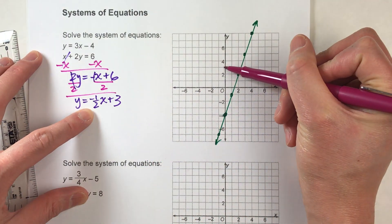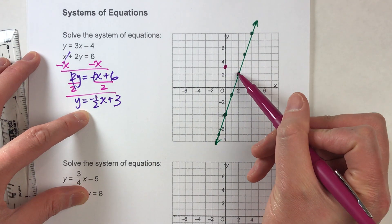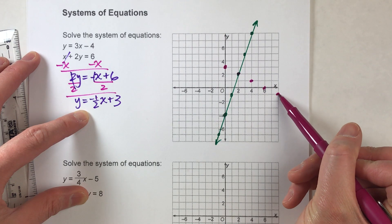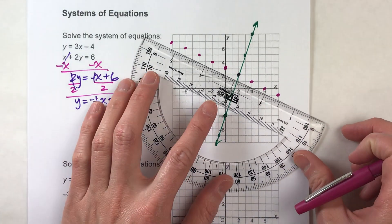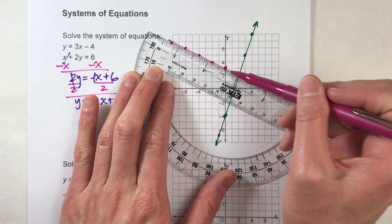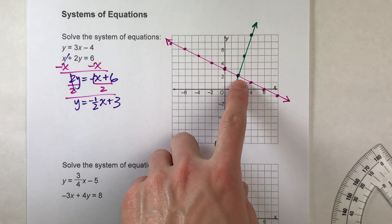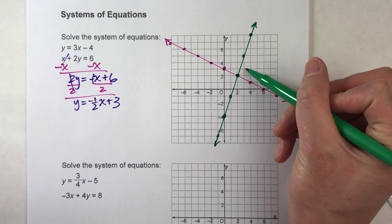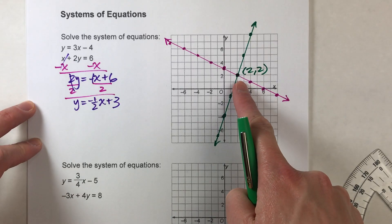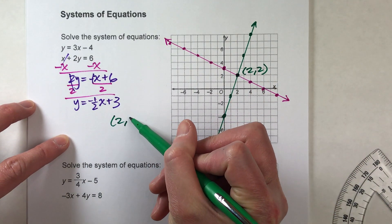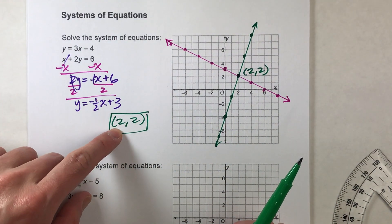So that's what I'm going to graph for the second equation. It starts at 3 on the y-axis, and it's going to go down 1, right 2, because the slope is negative one-half. Once I draw my line in there, you can see where the two lines intersect. If you look really carefully, this is the point of intersection right there — the point (2, 2). So the two lines have exactly one point in common: (2, 2).